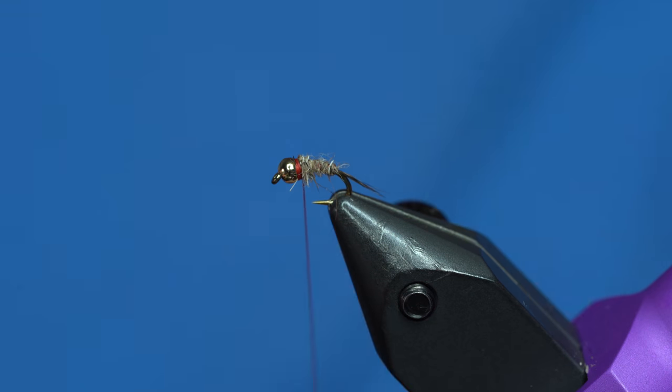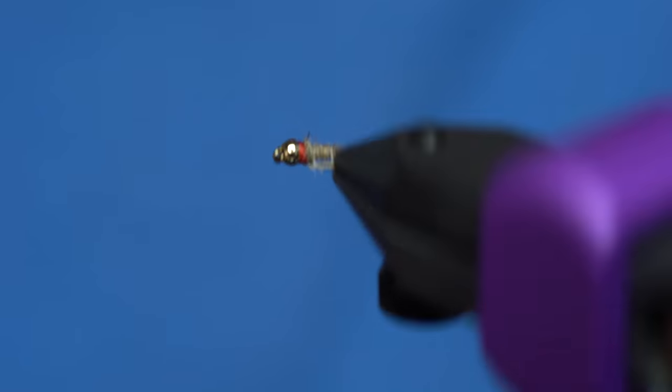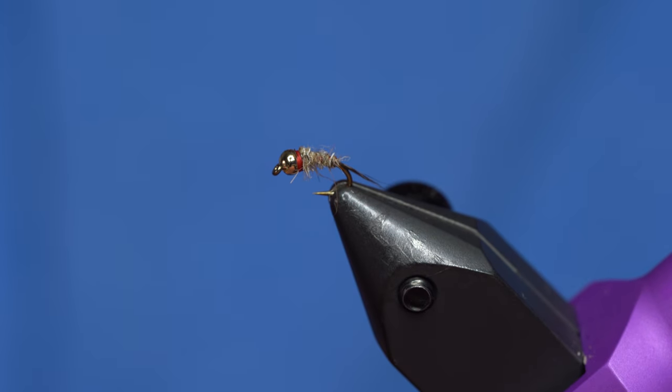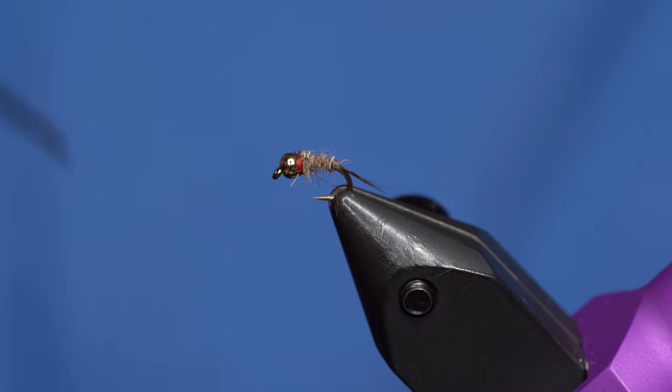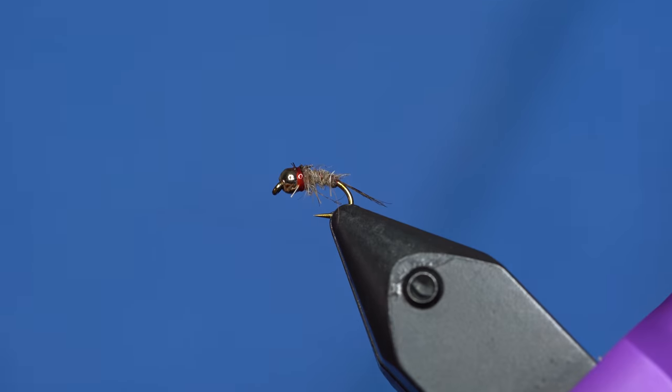That's it. The fish will eat that as a little mayfly nymph, they'll eat it as a sow bug, or they'll eat it as many different other things, especially if you add some weight to it.